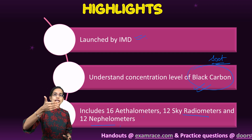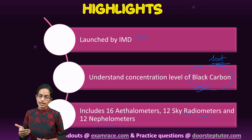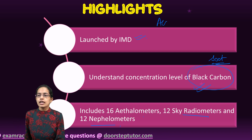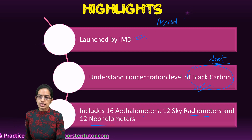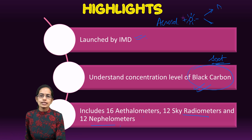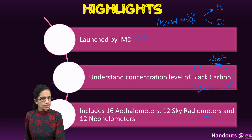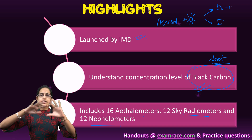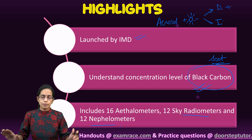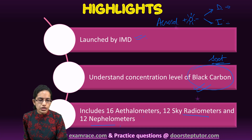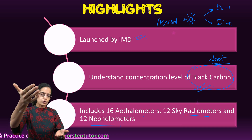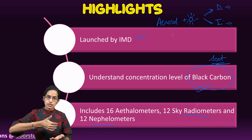When aerosols react with sunlight, two kinds of effects can be generated. One is the direct effect — aerosols scatter into space. The other is the indirect effect — it involves how clouds reflect and absorb sunlight.